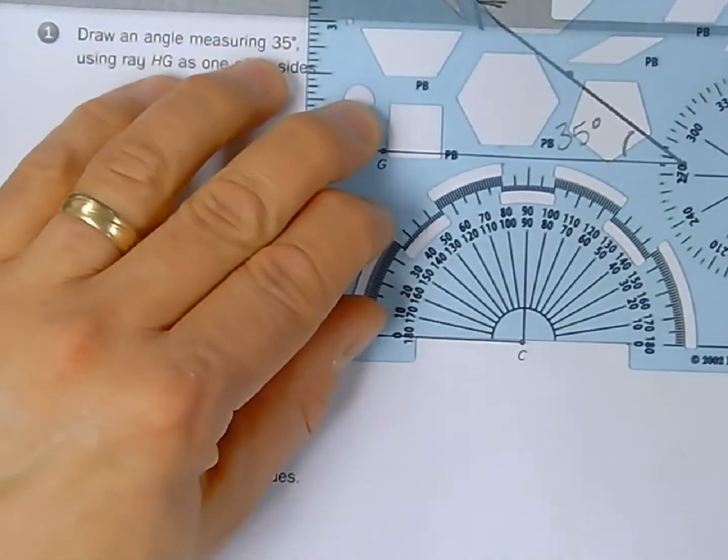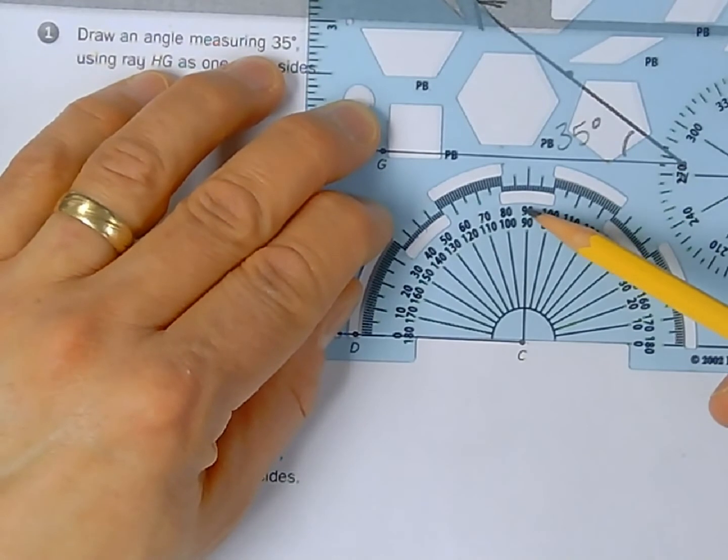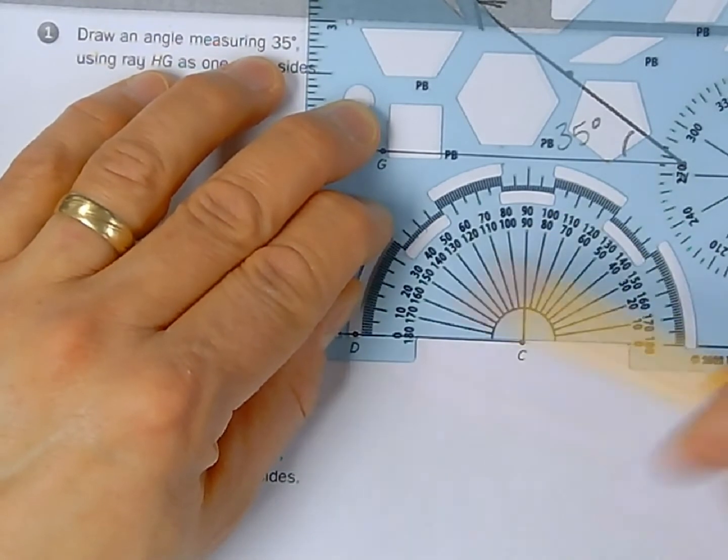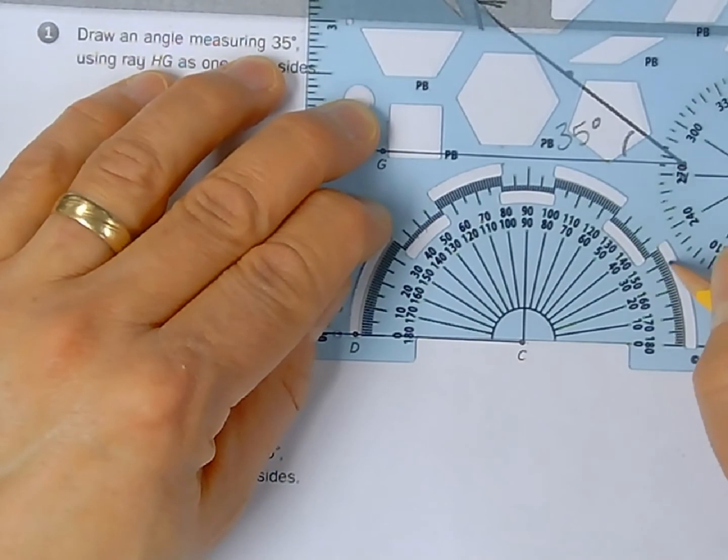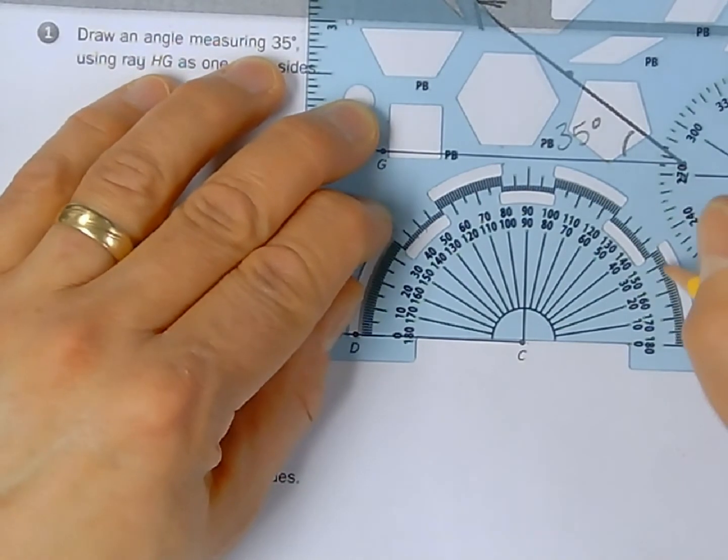150 degrees. Now that's going to be an obtuse angle, so here's the 90 degree mark, that's the halfway point from 0 to 180. 150 is about right here. I'm going to put my dot right here.